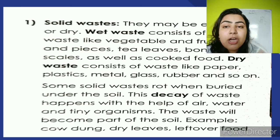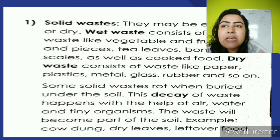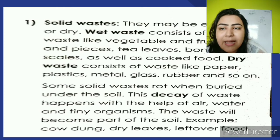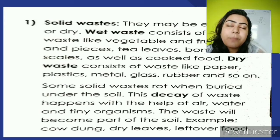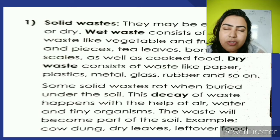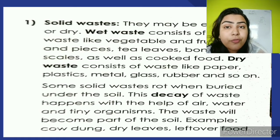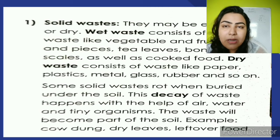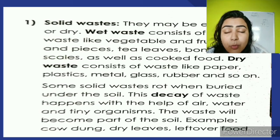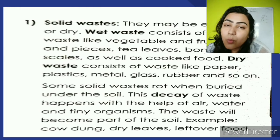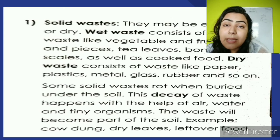Some solid waste rots when buried under the soil. Especially the wet waste, the kitchen waste — when we throw it out, over time it rots, meaning it becomes bad under the soil. This decay of waste happens with the help of air, water, and tiny organisms. There are very tiny organisms found in the soil which start eating these rotten things. Whatever is waste for us is food for them, and air, water, and those tiny organisms help in decaying the waste products.